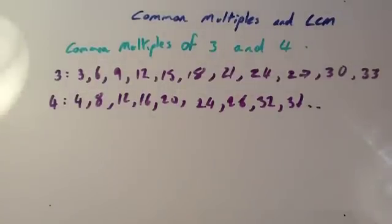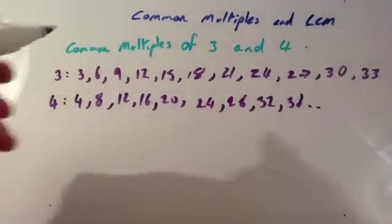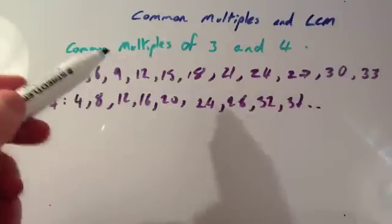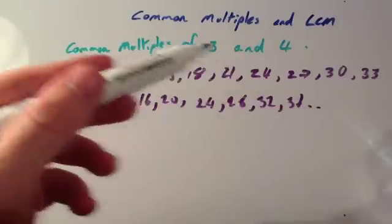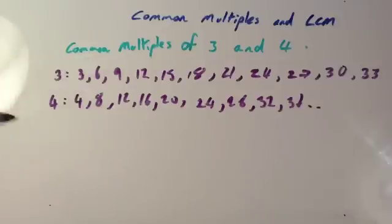So a common multiple is a number that's in both of these lists. The common multiples of 3 and 4 would be in both of these lists.